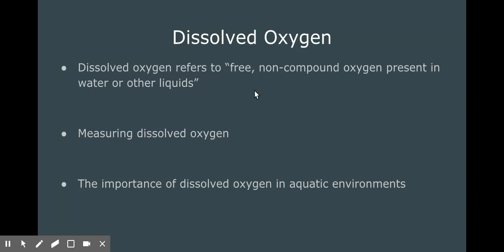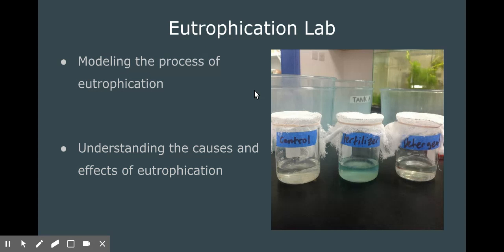With too little oxygen organisms are unable to survive. Dissolved oxygen is measured by the quantity of O2 molecules in a sample of water and is usually recorded in milligrams per liter. You will be measuring the dissolved oxygen content of water samples during the experiment using a dissolved oxygen probe to test the amount of dissolved oxygen in each of your beakers, which you can see in this picture here from when I tried the lab myself to improve it for you guys.